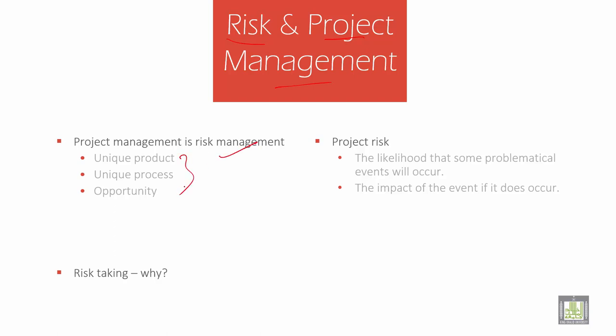The topics covered include uniqueness in product, uniqueness in process, and uniqueness as a rare opportunity. These are the main topics covered in this project management and risk management chapter. It also talks about how you identify and analyze the risk, and how you respond to the risk.